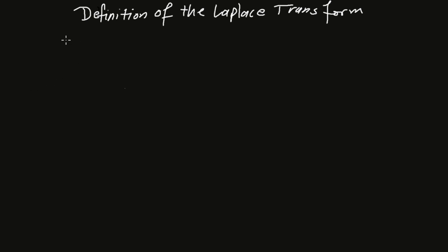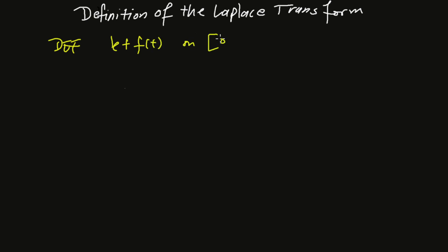The good thing is many of these transforms are already created — you'll see a table. But it's worth knowing how to derive them. Let's start with the definition: if you have f of t, a function on zero to infinity, this is a one-sided transform.